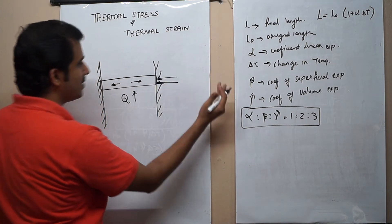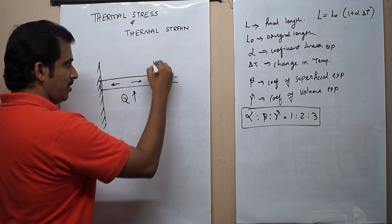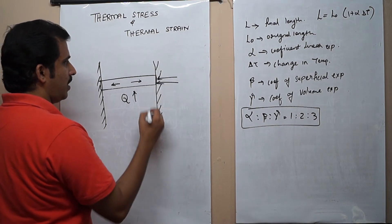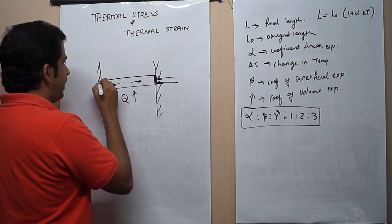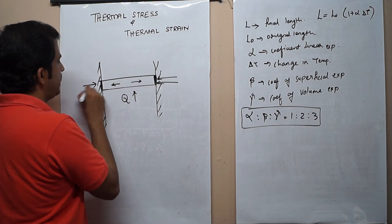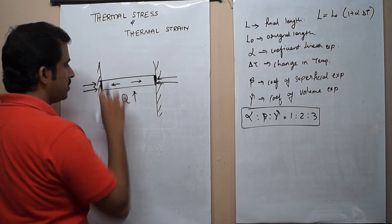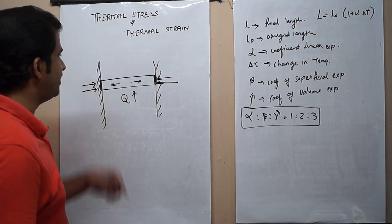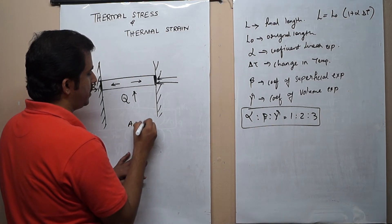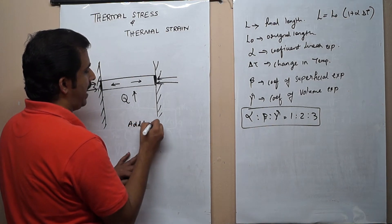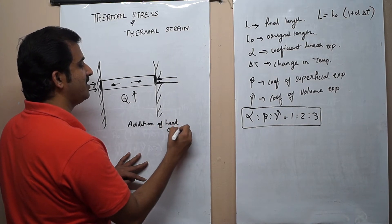But the rigid walls will try to suppress the expansion. Therefore, from outside there is a suppressive or compressive force through the fixed wall, and that force is acting on this area. So we can say that during expansion or during the addition of heat, a compressive stress is generated in this metal bar.